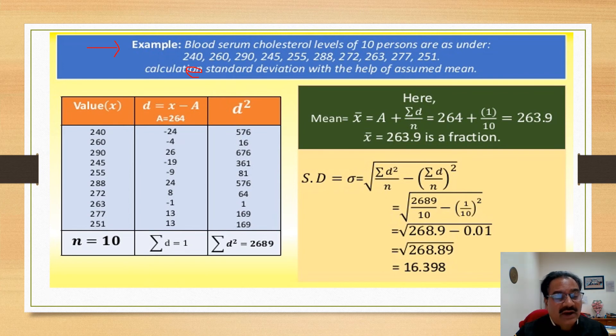Here, you can take x minus a. Assumed mean is 264. Already, it is there. 264 may be the assumed mean. Here, you can calculate. This is already x bar equals a plus summation of d by n. a is 264 plus 1 by 10, which equals 263.9. It means 263.9. So, you may calculate like this.